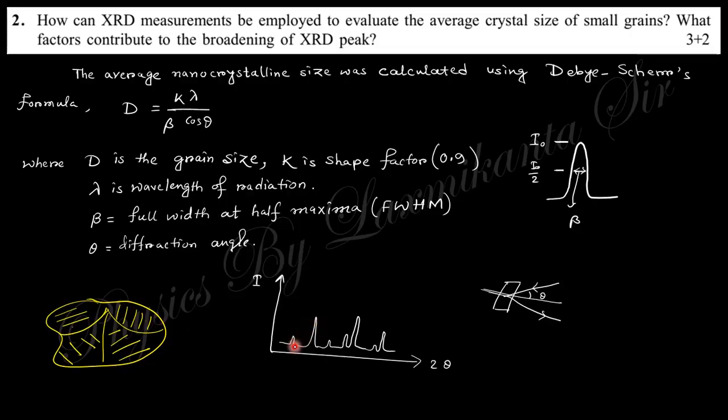If the grain size is larger, the peak height is maximum and narrow. The maximum value is I₀, and at half of this maximum value is I₀/2. The separation at this position is known as beta, the full width at half maximum. Theta is the diffraction angle.